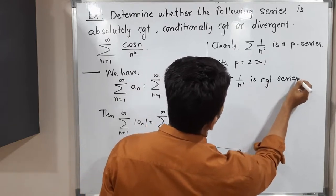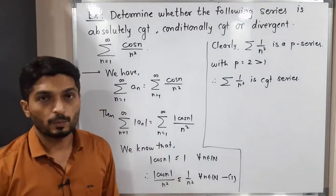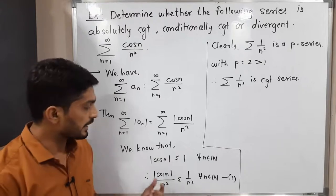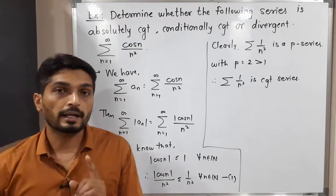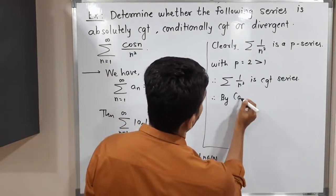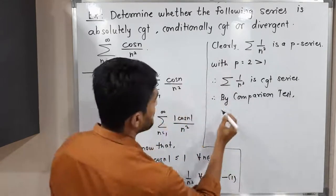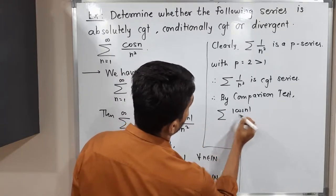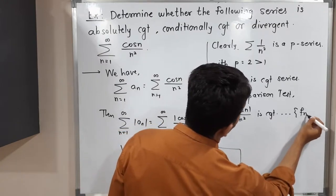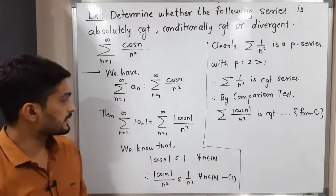We already have the inequality that mod cos n upon n squared is less than or equal to 1 upon n squared, and summation 1 upon n squared is a convergent series. That means the larger series is convergent, and therefore this series is also convergent by the comparison test. By the comparison test, we can say that summation of mod cos n upon n squared is convergent, from inequality (1).